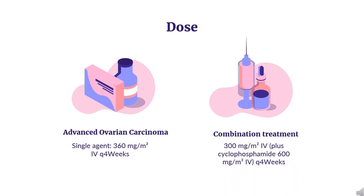Dose for advanced ovarian carcinoma. Single agent: 360 mg/m² every 4 weeks. Combination treatment: 300 mg/m² plus cyclophosphamide 600 mg/m², every 4 weeks.